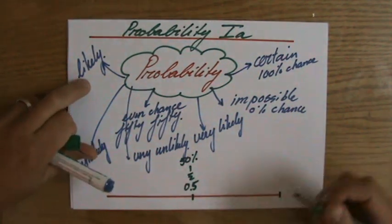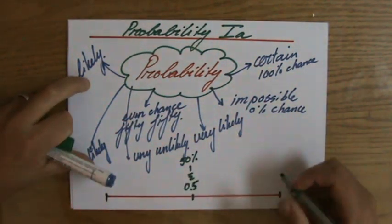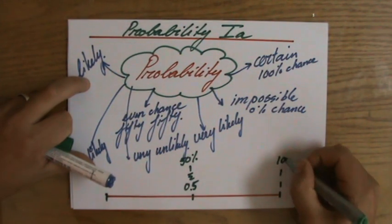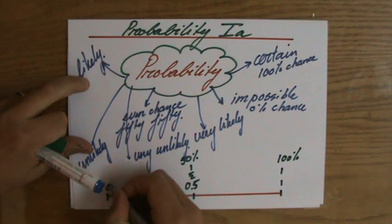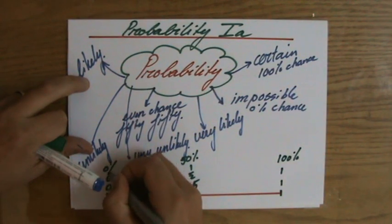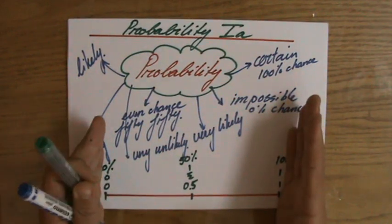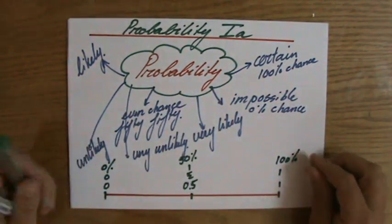And then on this side and on that side here, it is 1, or 1, or 100%. And this is 0, 0, 0%. Hopefully you realize that that is certain, that is impossible, and that is an even chance.